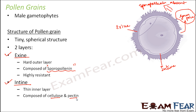Another important thing to note is that each anther has four microsporangia, that is four sacs. Inside each sporangium, thousands of microspores are formed because there are a lot of sporogenous cells which together make the sporogenous tissue, and each sporogenous cell produces four microspores. Since there are multiple sporogenous cells, thousands of pollen grains are formed inside each microsporangium.